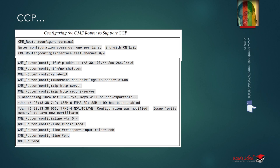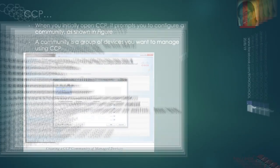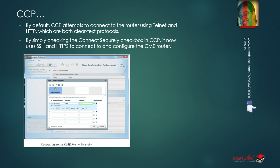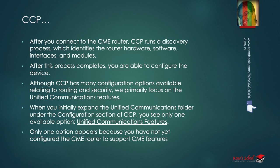Once you have done this initial configuration, open CCP — double-click the software. It prompts you to configure a community — give any name, like 'test'. A community is a group of devices you want to manage using CCP; under one community you can have multiple PCs managing the same router or multiple routers. By default, CCP attempts to connect to the router using Telnet and HTTP. By clicking the 'Connect Securely' checkbox, you switch to SSH and HTTPS. After connecting, CCP runs a discovery process that identifies the router hardware, software, interfaces, and modules. After discovery completes, you are able to configure the device.